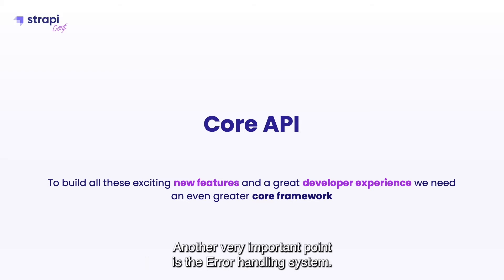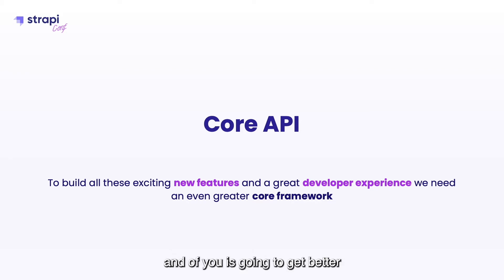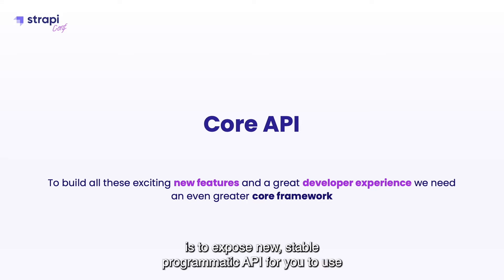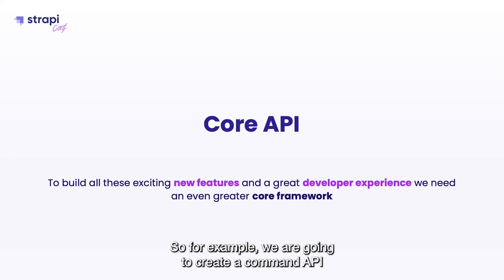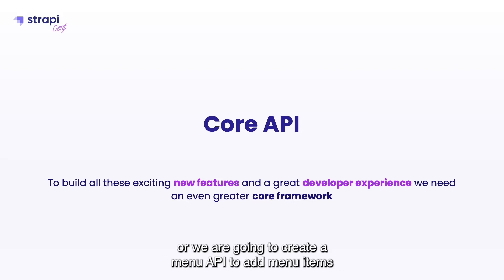Another very important point is the error handling system. We want to make sure that errors are handled from the DB layer all the way to the admin panel, so developers will know what is wrong and how to fix it. Finally, we want to expose new stable programmatic APIs — for example, a command API to add new commands to the CLI, or a menu API to add menu items in the admin panel.